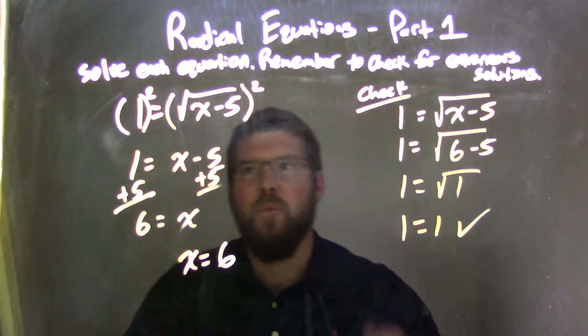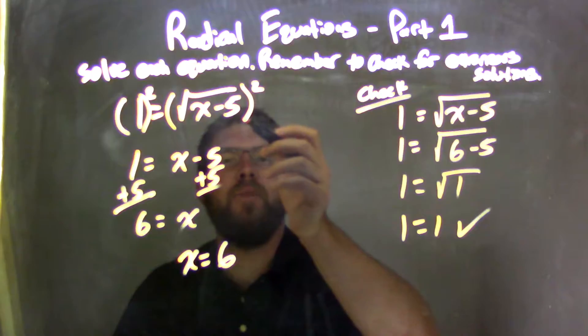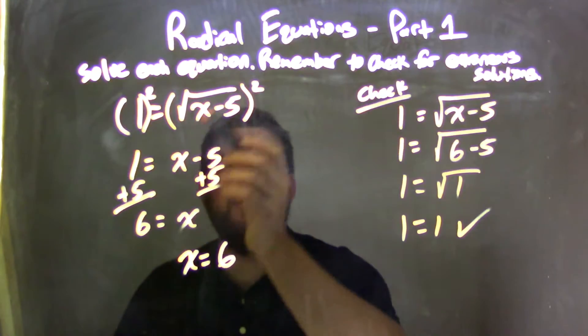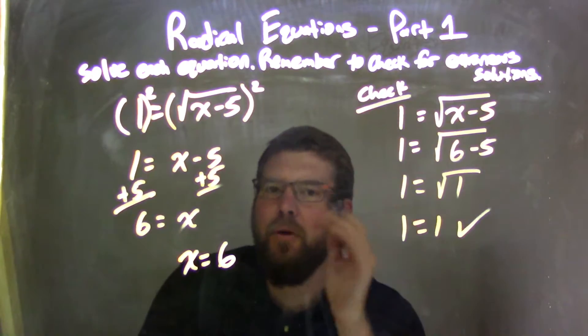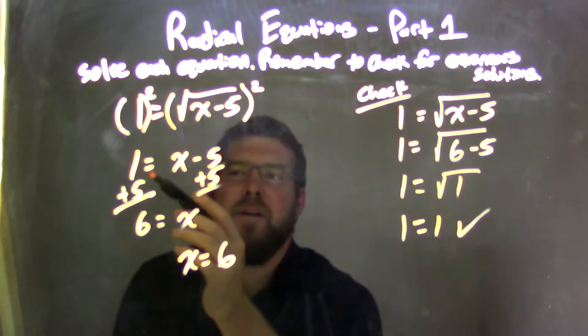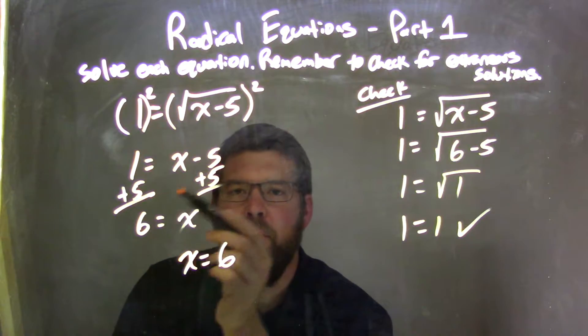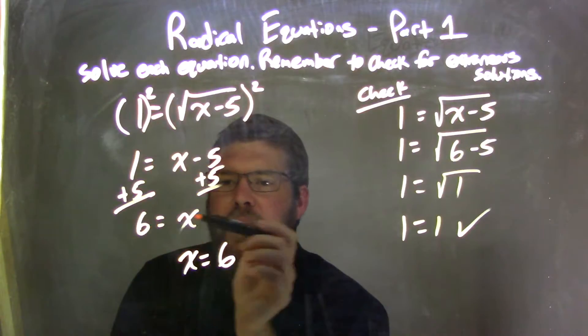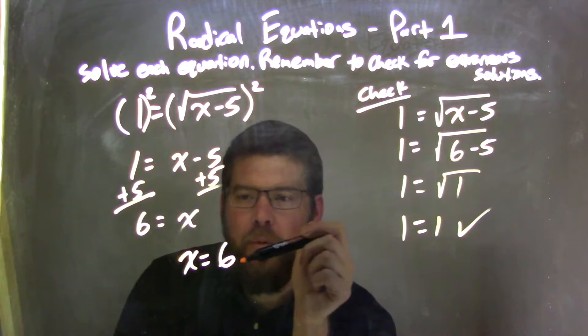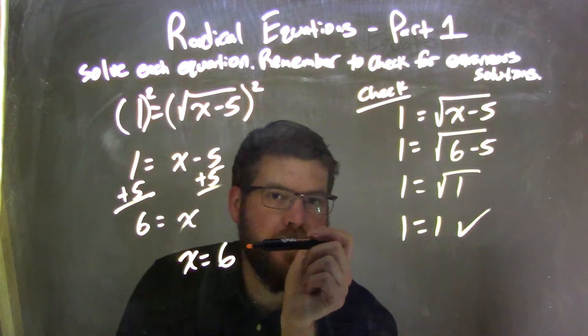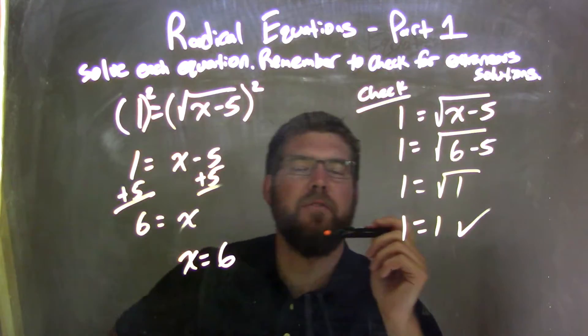Let's recap. We started with our original equation, 1 equals the square root of x minus 5. I squared both sides because the square root was already isolated. 1 squared is 1, and we're left with 1 equals x minus 5. I add 5 to both sides: 1 plus 5 is 6, and that equals x. Rewriting this to make it neat, x equals 6.